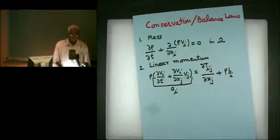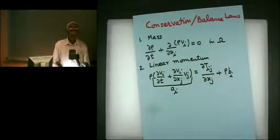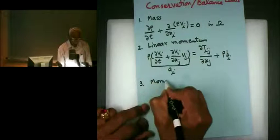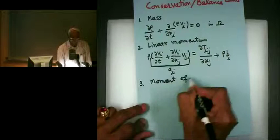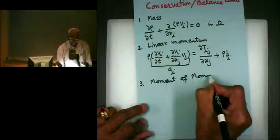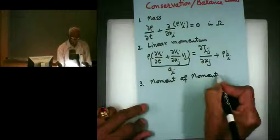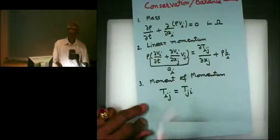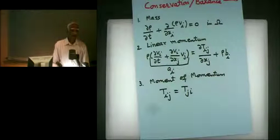So rho times A_i equals delta v_i over delta t plus delta v_i over delta x_j times v_j — that's the acceleration — equals delta T_ij over delta x_j plus rho b_i. I think Mark Kramer likes to use the transpose of what I am doing, but it's the same thing. Mass density is rho. And the third one is moment of momentum: T_ij equals T_ji, meaning the Cauchy stress tensor is symmetric.